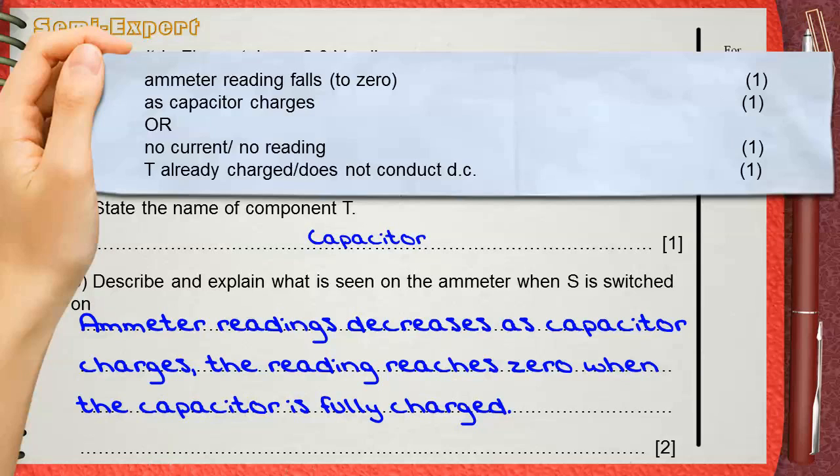Let's compare the first answer with our answer. We said ammeter reading decreases. This is the first mark. As the capacitor charges. This is the second mark of the question.